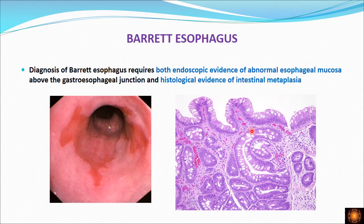For the diagnosis of Barrett's esophagus, the patient should have both endoscopic evidence of abnormal mucosa and histological evidence of intestinal metaplasia. Both should be present to diagnose a person with Barrett's esophagus.